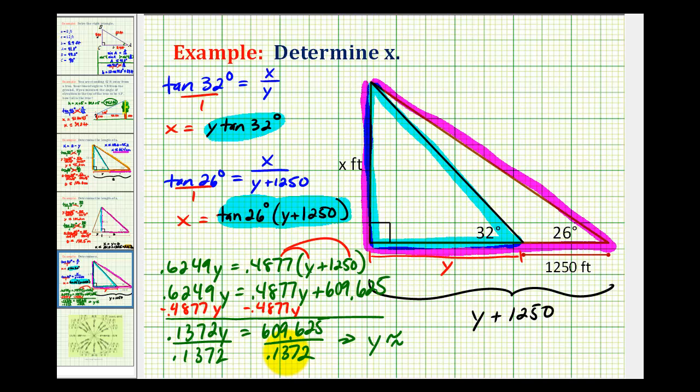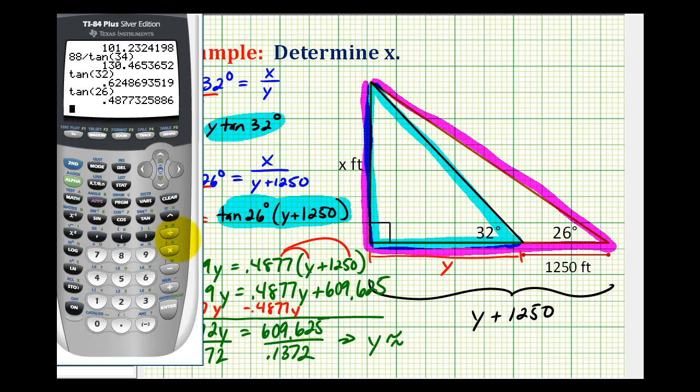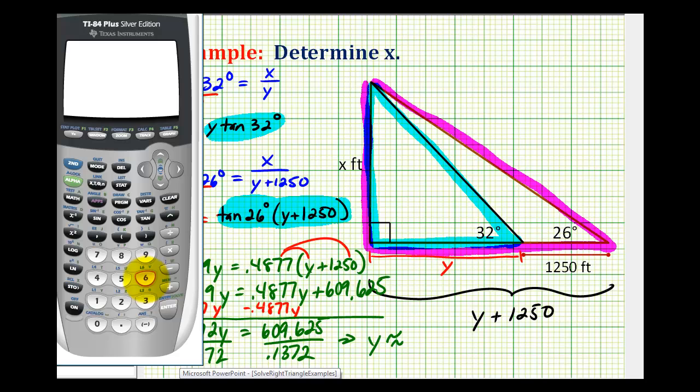So y is approximately equal to this quotient, 609.625 divided by .1372. So y is approximately 4,443.3.